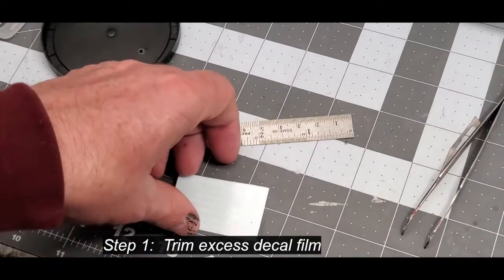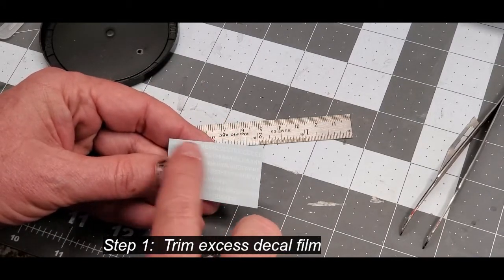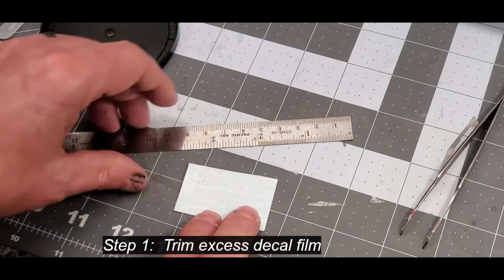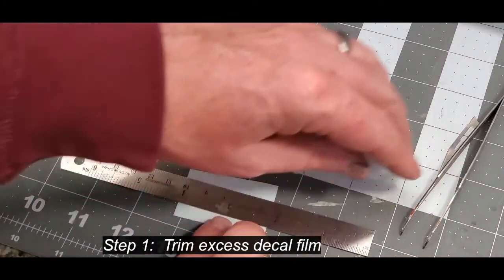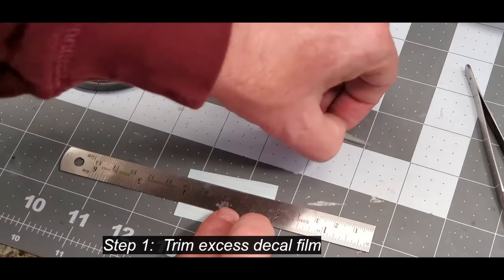The first step in doing these decals will be to trim the film. I want them to be very tight and very close sitting. The only way I can do that is to trim the film. The easiest way to do that is to use a simple ruler and a scalpel.